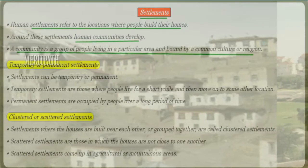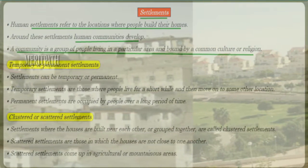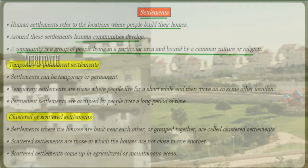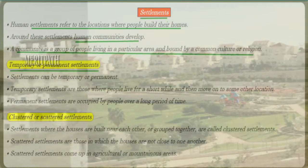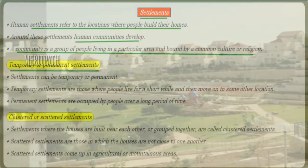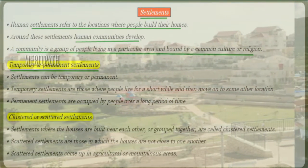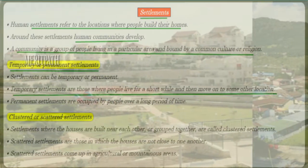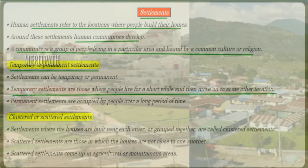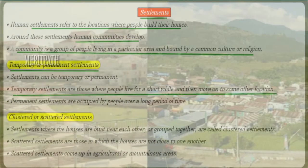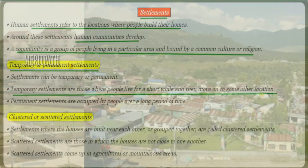There are two types of settlements: temporary settlements and permanent settlements, as well as clustered or scattered settlements. A settlement can be either temporary or permanent. Temporary settlement means people live in a particular place for a short time and then move to some other place.